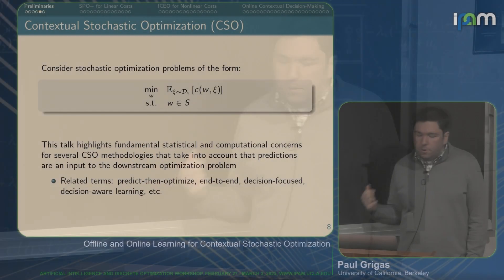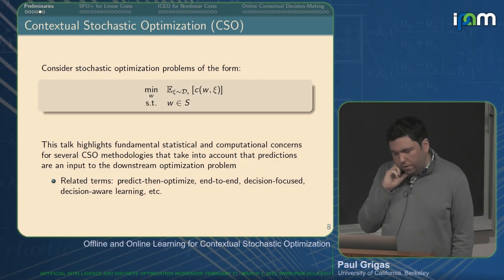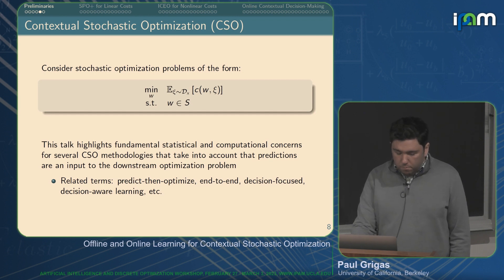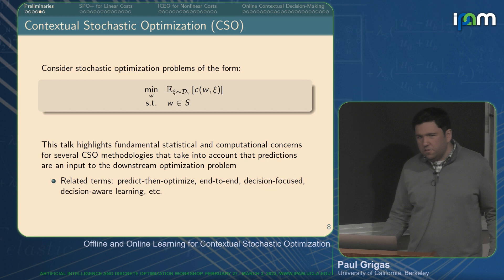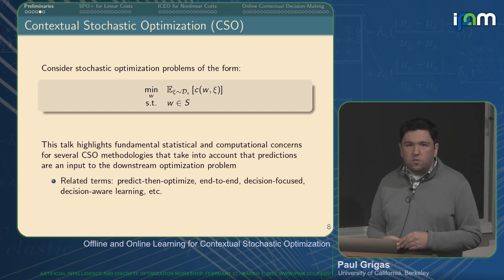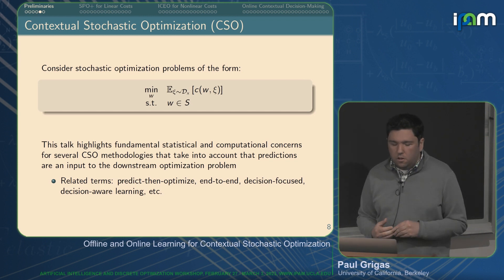In this talk, I'll highlight fundamental statistical and computational concerns and results we've developed for several methodologies for contextual stochastic optimization. All of them take into account the fact that predictions we're building are inputs to a downstream optimization problem — our objective is ultimately this contextual stochastic problem. This falls broadly under the umbrella of predict-and-optimize, end-to-end learning, decision-focused learning, or decision-aware learning.